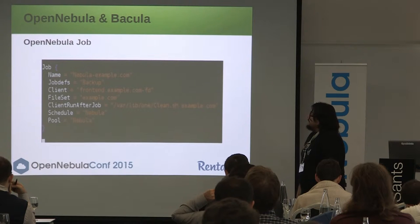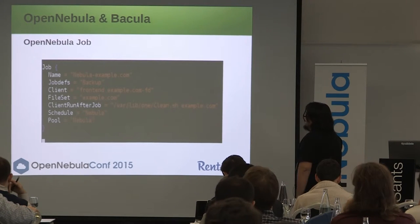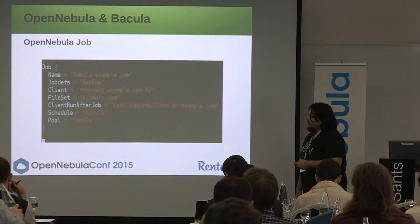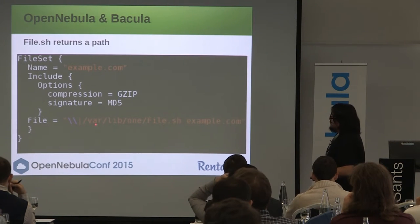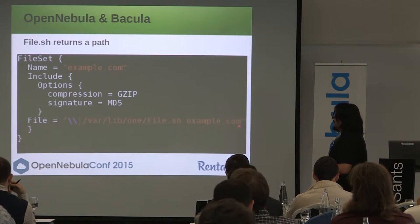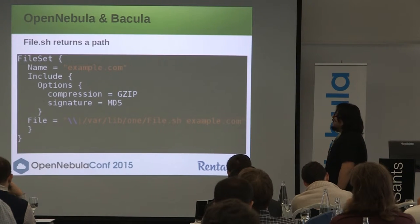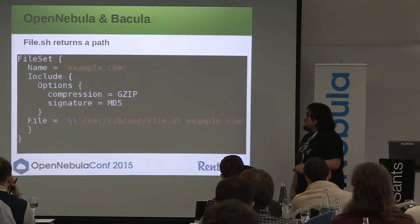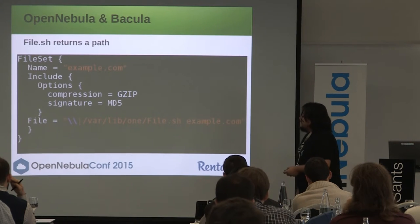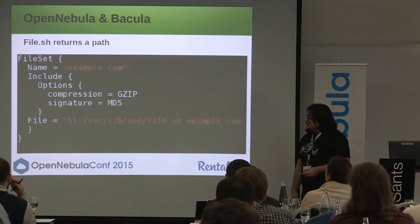So this will be a job that will work. This is the OpenNebula frontend, and this is the cleanup script to remove the copy after it is stored at OpenNebula. And this is the file set with the trick to execute the script with the parameter sample.com, which is the virtual machine name. You can use the ID too. And it's going to use the oneVM save-as utility with the disk you want to backup — mainly the one that has the operating system in it — and it's going to return the file path to the disk images.